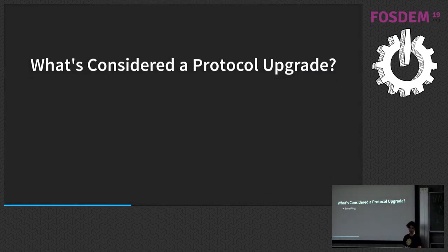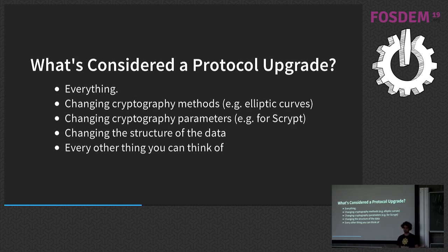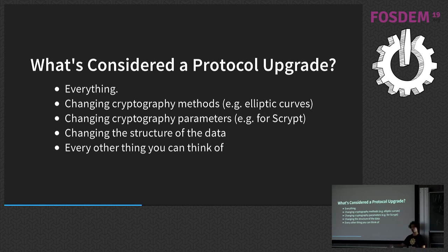What is considered a protocol upgrade? Literally everything — shuffling the data, splitting data, adding color to a calendar, removing anything. If you're not careful about handling that, you can have crashes. Changing cryptography methods is one of them — adding elliptic curve support or post-quantum lattice-based encryption all require a protocol break. Even changing parameters to the scrypt derivation function — if you realize the original parameters weren't strong enough — is a break. Every structural change to the data is a break.